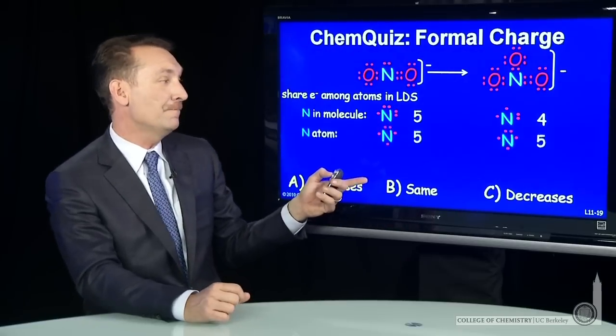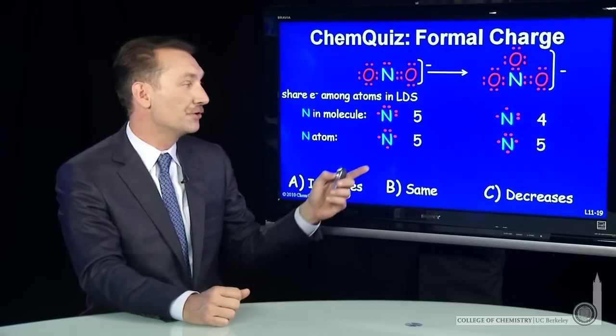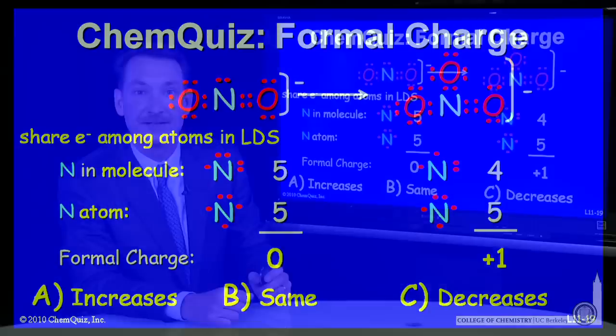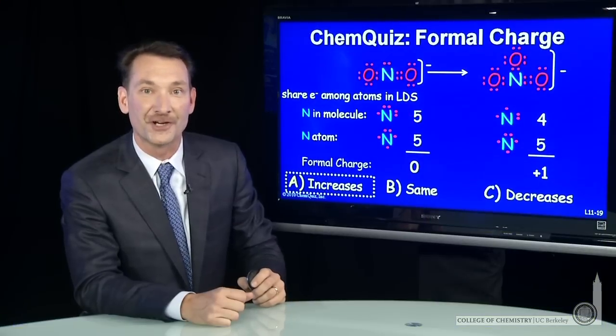Nitrogen as an atom has five electrons. So you can see the formal charge goes from zero in NO2 minus to plus one in NO3 minus for an increase in the formal charge.